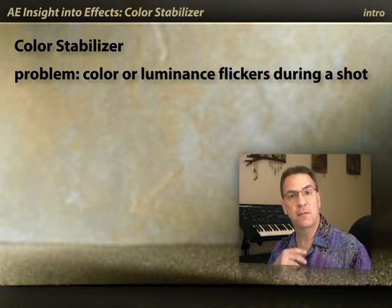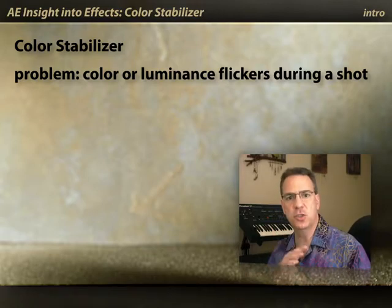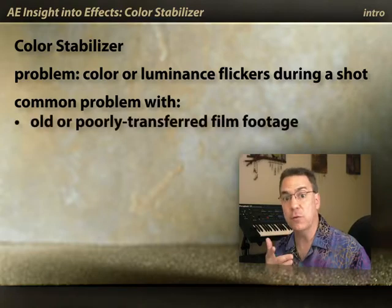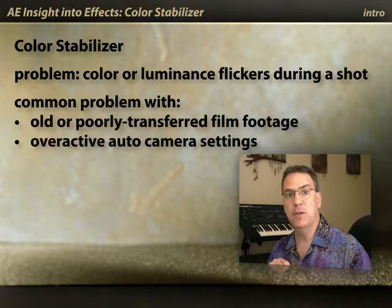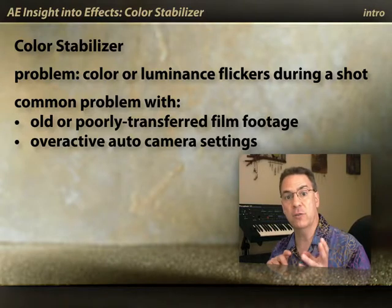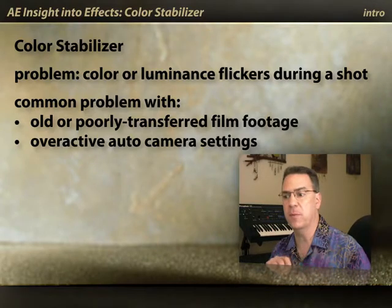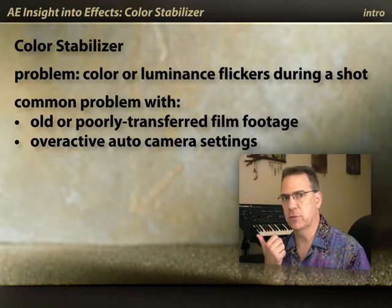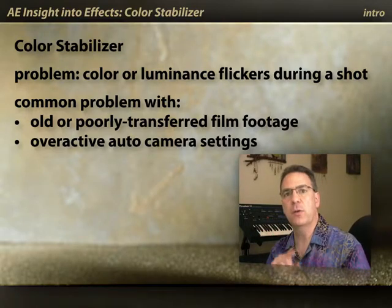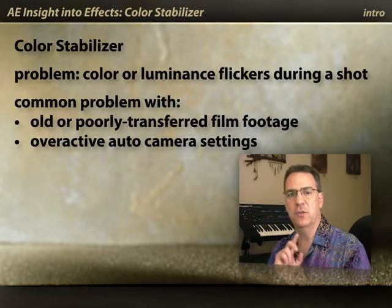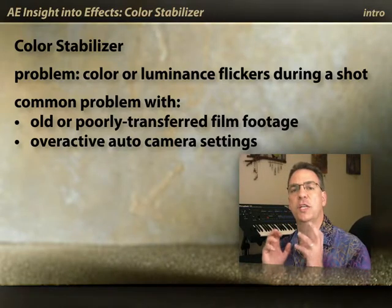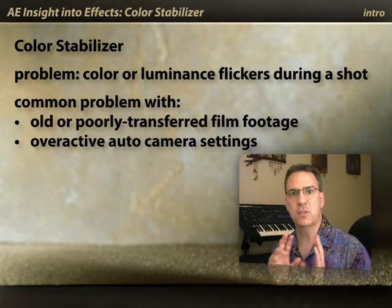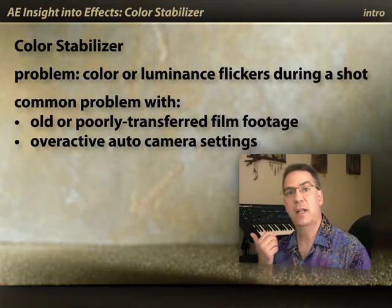Sometimes you may encounter a shot that flickers — the luminance values change erratically throughout the shot. This can happen with old archival footage due to bad film development, or if you have auto-contrast or auto-exposure on the camera and something flies through the scene, temporarily darkening or brightening it. There is an effect in After Effects called Color Stabilizer which can help remove these flickers in contrast or color throughout a shot. Let's give it a quick look.